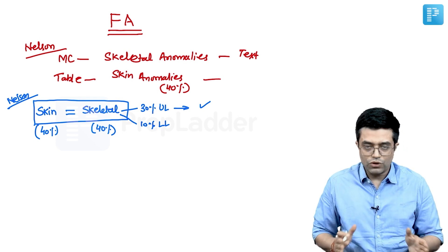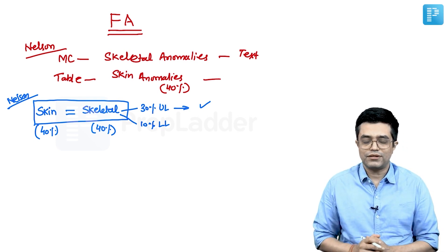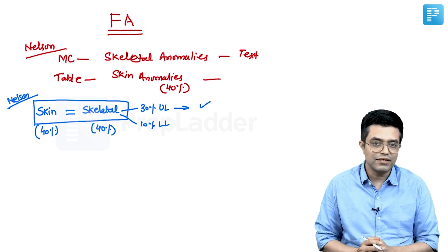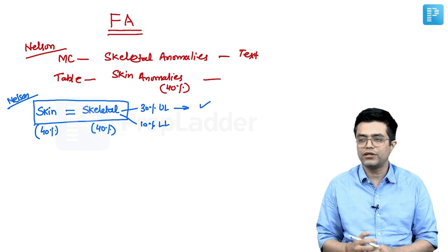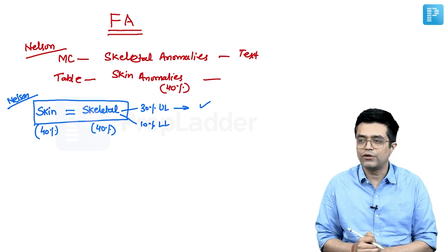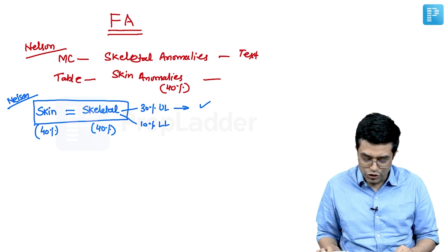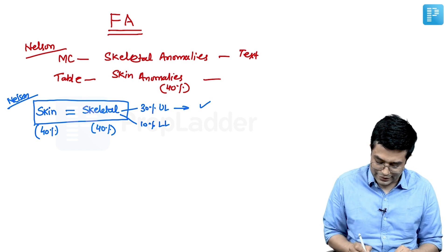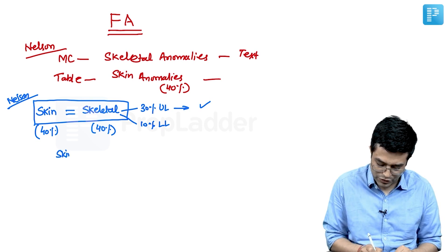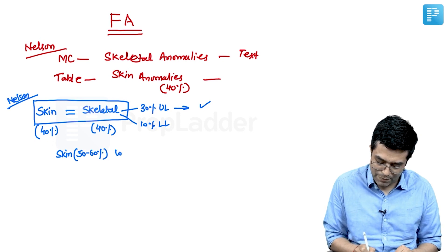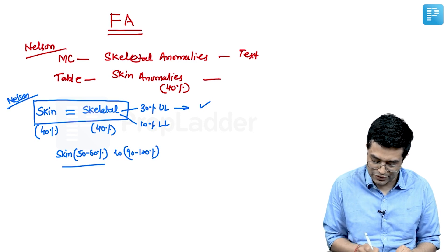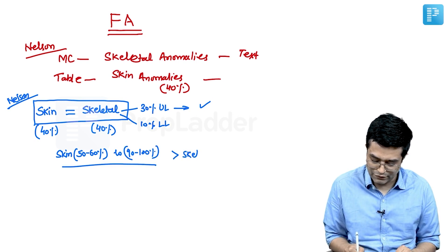It also depends upon the study you're quoting. If you do PubMed search, you'll find Asian studies including journals from Korea and PMC showing skin manifestations reported in as high as 50 to 60 percent in one study, up to 90 to 100 percent in another study, whereas skeletal manifestations are reported relatively less.